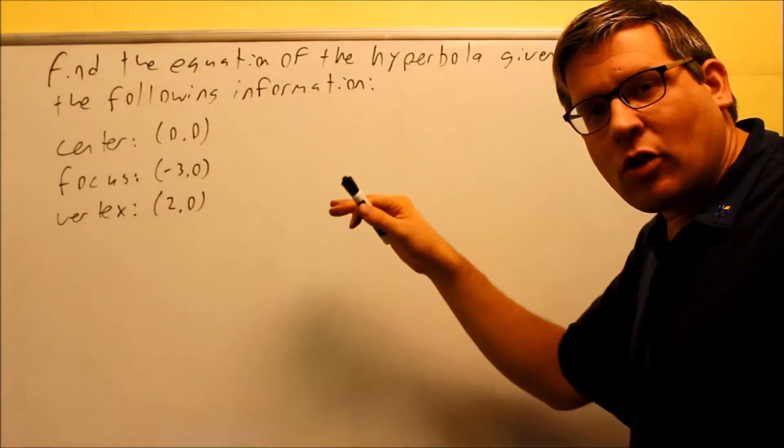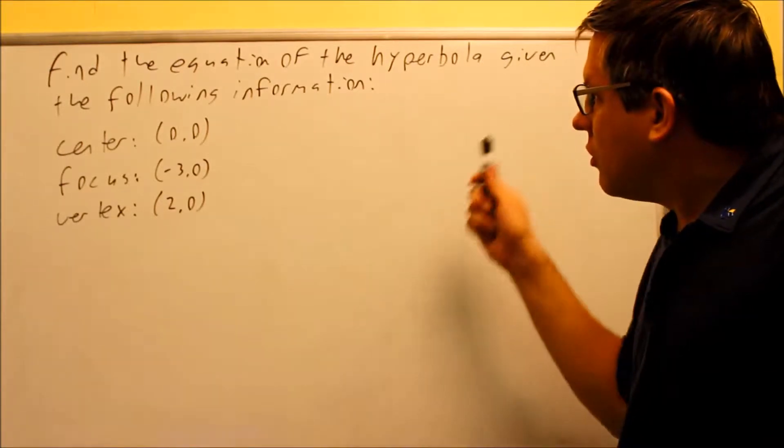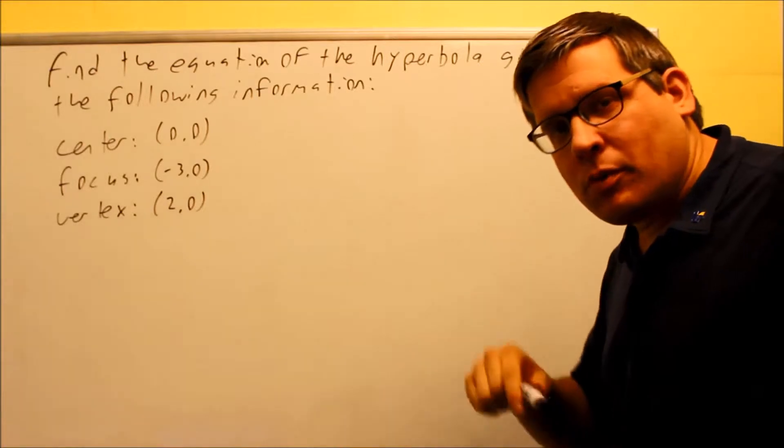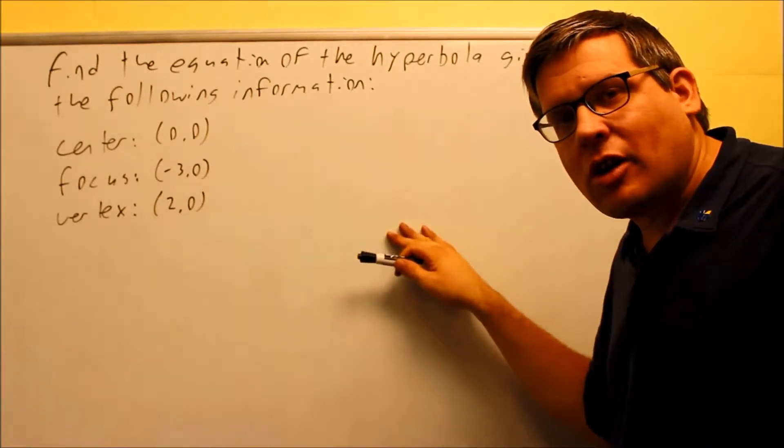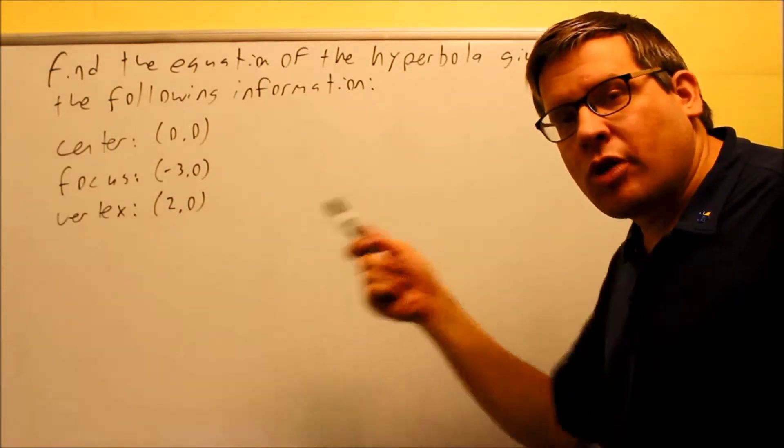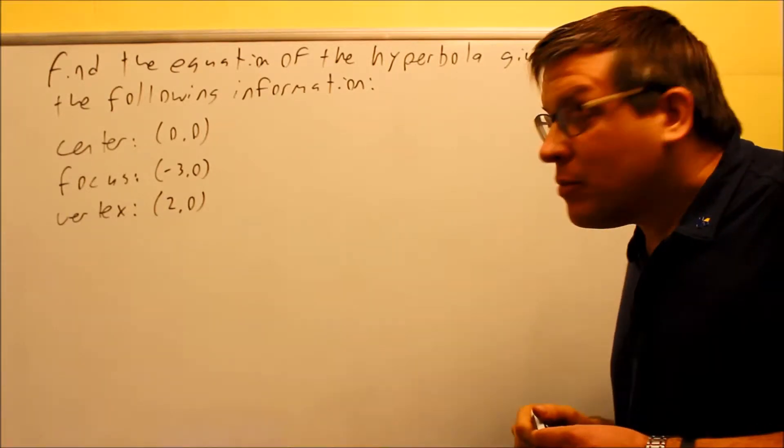Now we're going to look at some problems where we're just writing the equation of the hyperbola. We're not going to worry about the graph at all. However, as we've talked about in previous sessions with the parabolas and also the ellipses, the best strategy for looking at these problems would be to plot the information that's given. Once we plot it, we can tell which direction the hyperbola is opening up and we'll be able to get our information for A, B, and C.